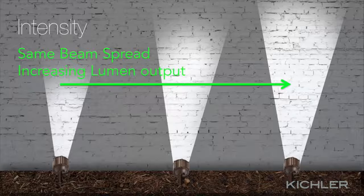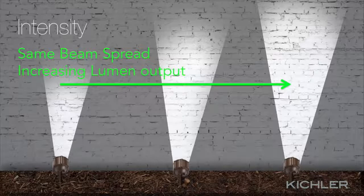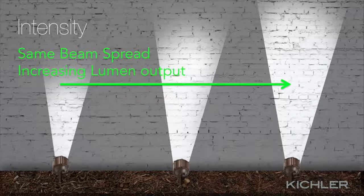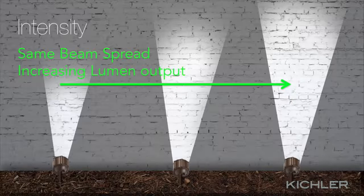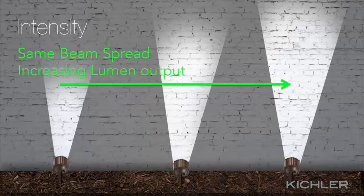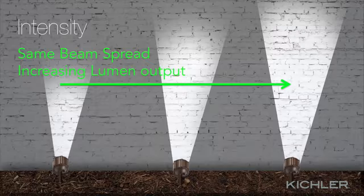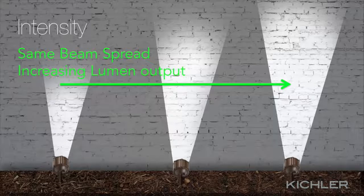Lumen output is a measure of the intensity of light — a 352-lumen fixture will produce more light than a 116-lumen fixture. Note that two fixtures with the same wattage can have different lumen outputs. In the past, many professionals referred to wattage to indicate light intensity, but with today's LED fixtures it is more precise to use lumens as the measure of output.